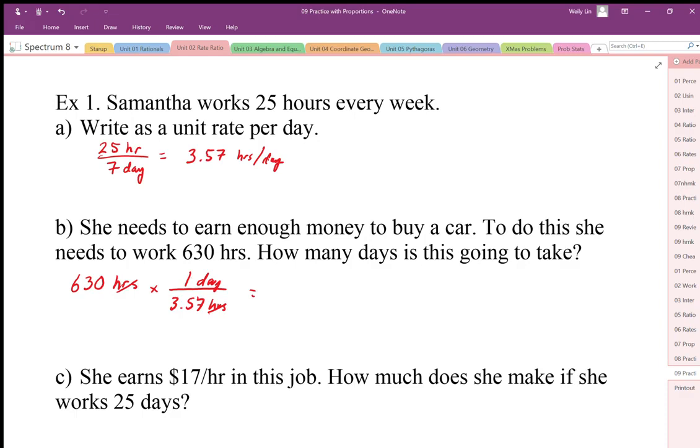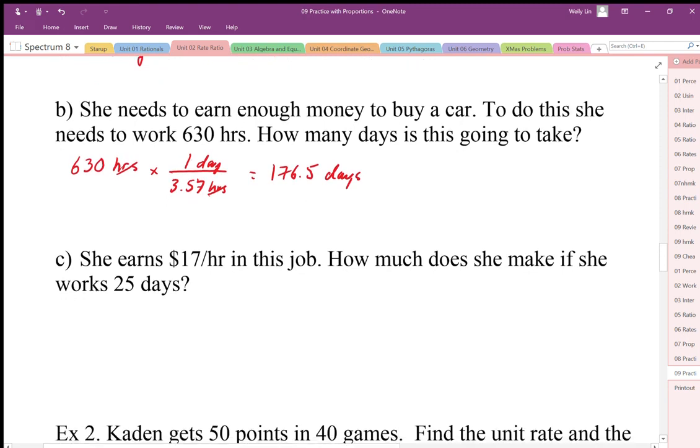We're going to end up with 630 divided by 3.57, and I'm getting about 176.5 days. I can see that my units are correct because that's the units that are left over.